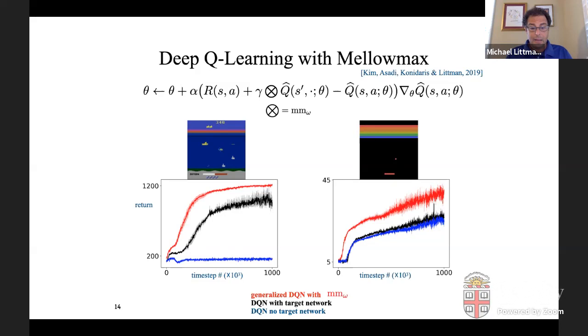That the red line here generalized DQN with the mellow max operator was actually getting higher returns or better learning curves across a set of games, including this submarine game and the this pong-ish kind of game breakout. That was doing better than DQN with the target network and much better, certainly in the case of the submarine game than DQN if we took the target network away. So it really is that the DQN with no target network, and that's the purplish or bluish line and generalized DQN with mellow max are the same algorithm, except we're just, we just took the max out and we're using the mellow max operator instead.